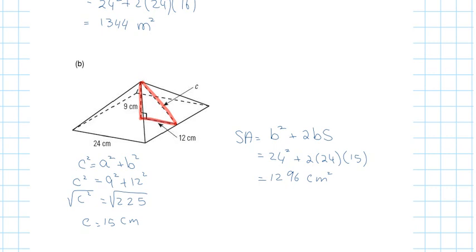In most cases, they'll either give you the height of the pyramid or the slanted height directly. You need to recognize which one you have, and if it's the pyramid height, solve for the slanted height first before applying the surface area formula.